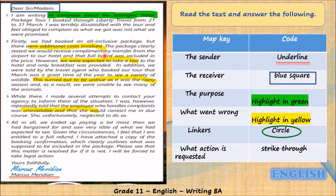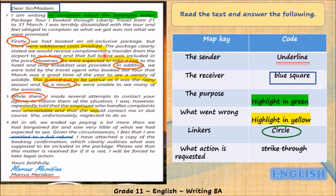What do you think he is requesting? He is entitled to a full refund because of all these circumstances and the bad situation he was in. Now let's circle the linkers used in this letter. The writer made use of: firstly, however, in addition, as a result, all in all.